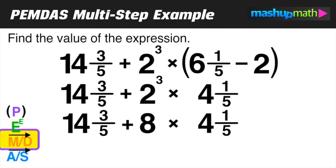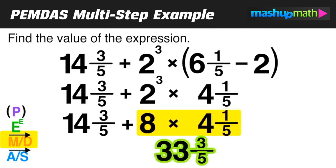In this case, we only have one of these operations, that is multiplication, which we can see is between 8 and 4 1/5. So let's find that product. 8 times 4 1/5 equals 33 3/5.